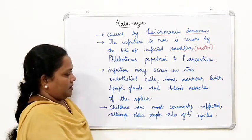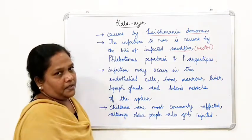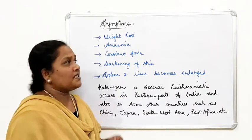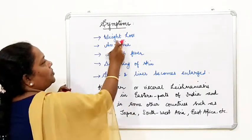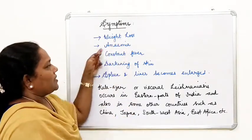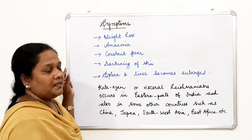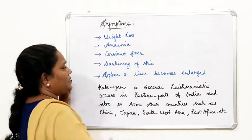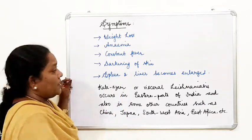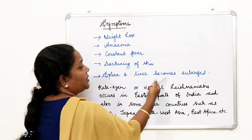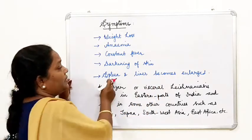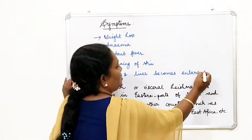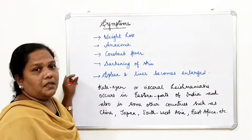Children are most commonly affected, though older people are also infected. The symptoms of Kala Azar include weight loss, anemia, constant fever, and darkening of the skin.